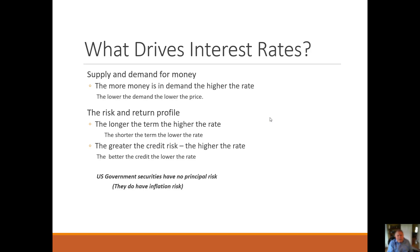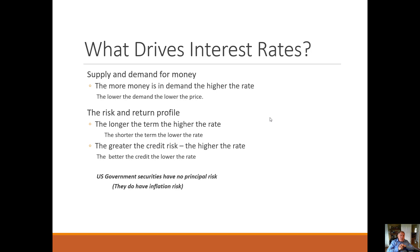What drives interest rates overall? The more money is in demand, the higher the rate; the lower the demand, the lower the price — basic supply and demand. Then you look at the risk and return profile. The longer the term of the loan, the higher the rate because you're taking on more risk over time. The shorter the term, the lower the risk. We also look at credit: the higher the risk of not getting paid, the higher the rate; the better the credit, the lower the rate. U.S. government securities have no principal risk, but they do have inflation risk.